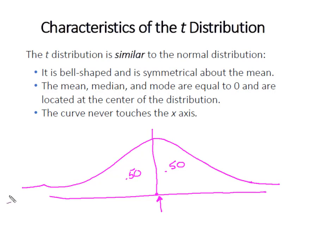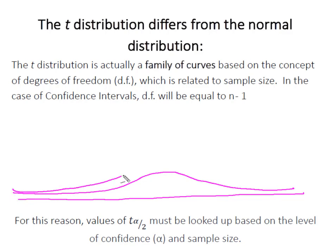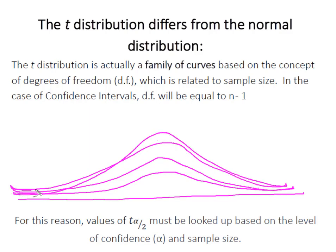There are a couple of key differences with the t distribution and the z distribution. The key difference is the t distribution is actually a family of curves based on this concept of degrees of freedom, which is directly related to sample size. If we looked at this family of curves, at an n of 2 you would have this incredibly flat curve, and then at n of 10 you would get a little bit more normal, at n of 20 a little bit more normal, and by the time we get to an n of 30 we'd be looking very normal. Because of this, the area in these tails is not going to be the same for every one of these curves.